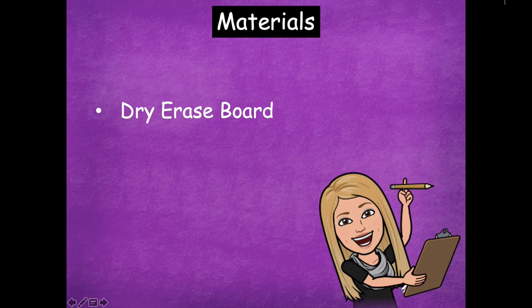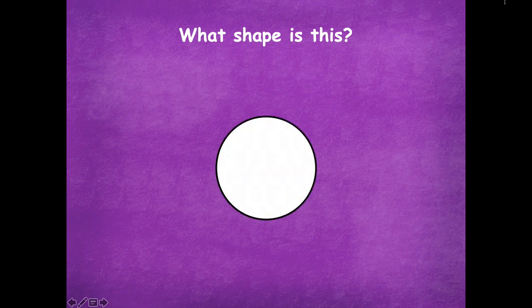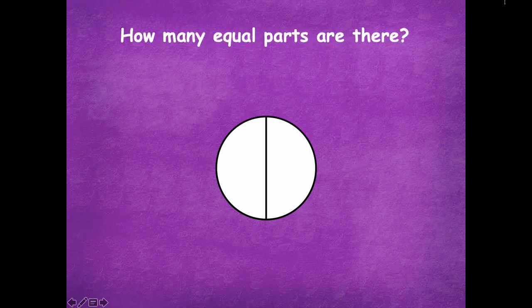The materials that you'll need are just your dry erase board for this lesson. All right, so friends, what is this shape? We'll start with something easy. Yeah, it's a circle. Okay, so let's partition this whole. So how many equal parts are there? There's two equal parts.